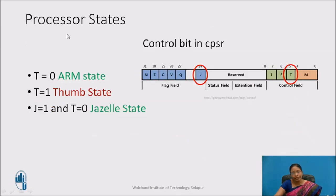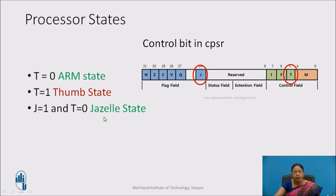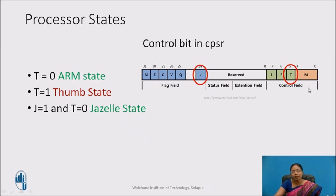Now let us talk about processor states. There are 3 different states: ARM state, Thumb state, and Jazelle state. These states are set using the T and J bits. When T bit is 0, the processor is in ARM state. When T equals 1, the processor is in Thumb state. When J equals 1 and T equals 0, the processor is in Jazelle state.